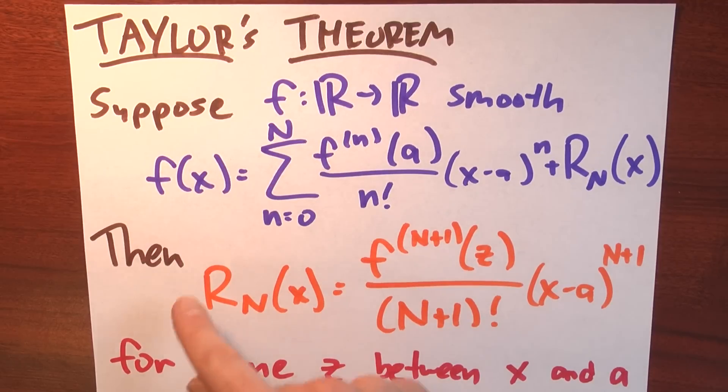Then this happens, big r sub big n of x is given by this, the big n plus first derivative of f at some point z between x and a, divided by big n plus 1 factorial, times x minus a to the big n plus first power.